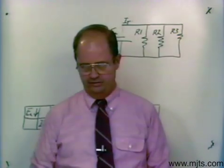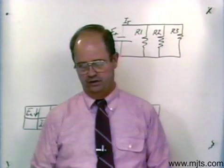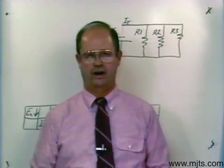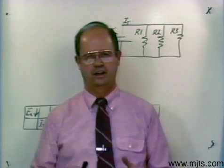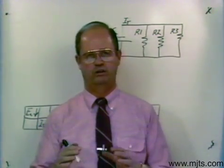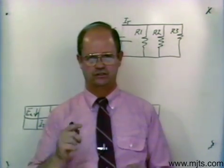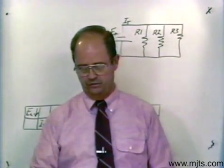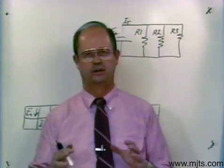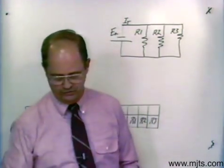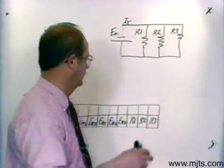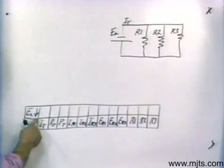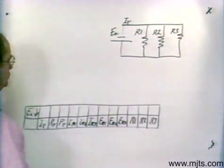Now on assignment sheet number 5, we have interrelationship analysis. I think this is particularly good practice in analyzing a circuit. We're going to take one of the parameters in a circuit and change it, and see how it affects all the other parameters. I have taken number 1 from assignment sheet number 5 and I've got it drawn up here. Let's take this situation and see what effect lowering the value of voltage would have on the rest of those parameters.